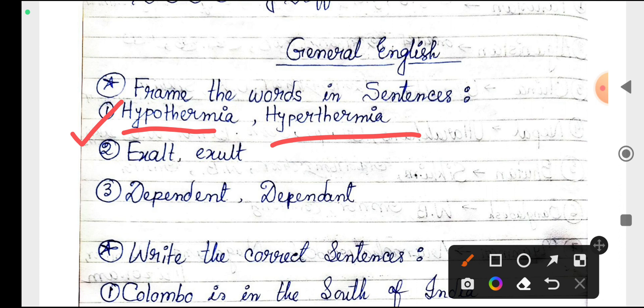You have to know the meaning, it is very necessary. Hypothermia means the human body temperature is reduced, the reduction of human body temperature and the low temperature of human body is called hypothermia. And hyperthermia means extreme body temperature of human being.